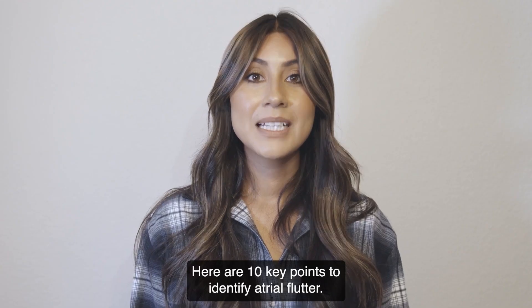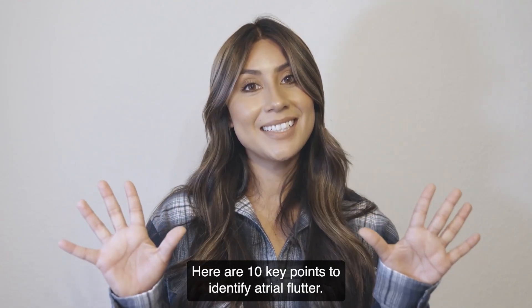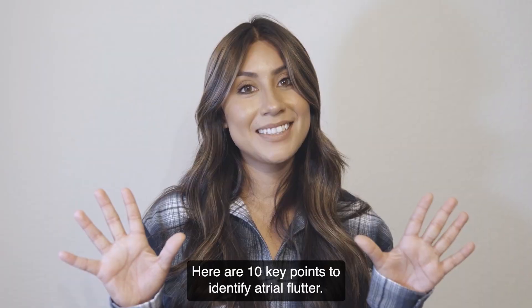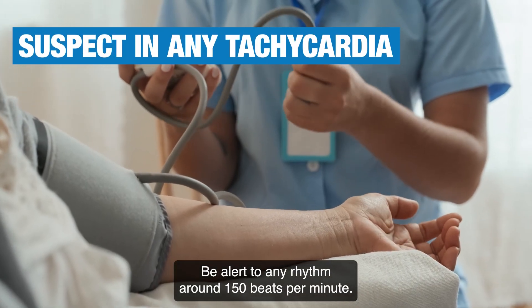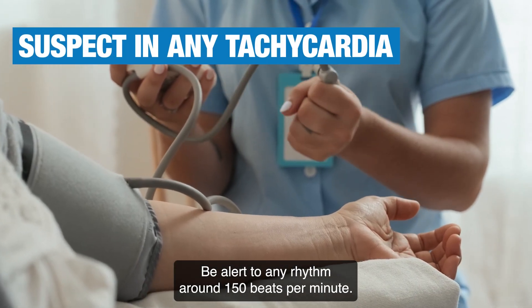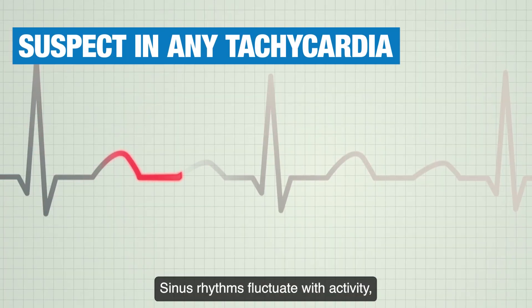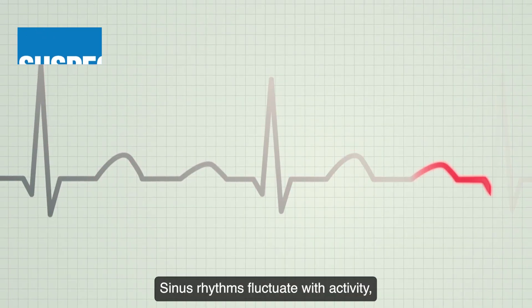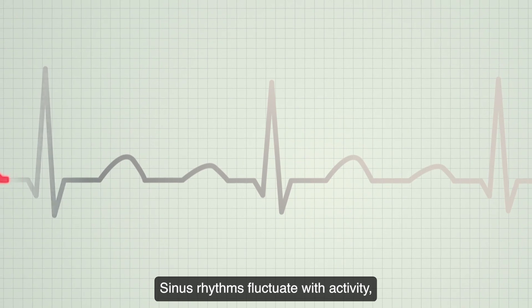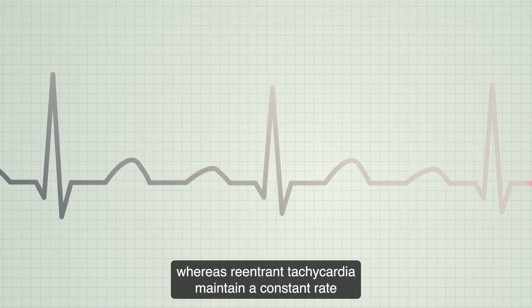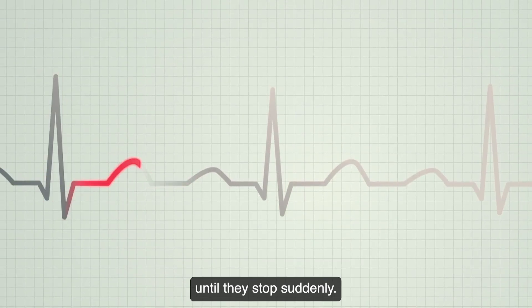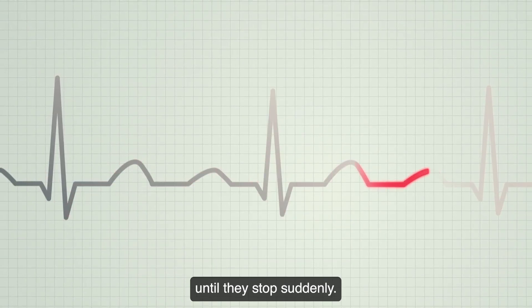Here are 10 key points to identify atrial flutter. Be alert to any rhythm around 150 beats per minute. Sinus rhythms fluctuate with activity, whereas reentrant tachycardias maintain a constant rate until they stop suddenly.